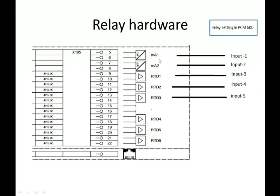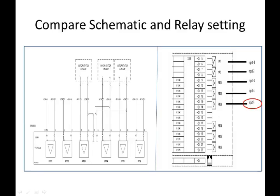According to this relay, settings will have input 1, input 2, and so on. Now I'm going to compare the relay settings and schematic. According to the schematic, the winding RTD starts from 3, but for relay settings it will start from input 5, since the first two are for mA sensor.